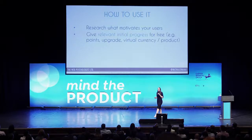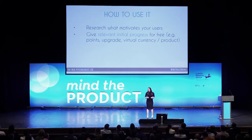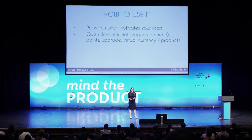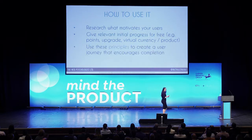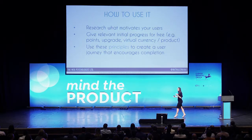If you want to use this, research what motivates your users — also psychologically, what emotional or psychological payoff are they getting from engaging with you? Is it intrinsic motivation — fun in and of itself — or extrinsic, like a loyalty reward or financial benefits? Once you've understood what's motivating them, you can give them relevant initial progress: points, upgrades, virtual currency, or potential products. Map out the user journey to create a system that's more engaging and gets people through quicker.